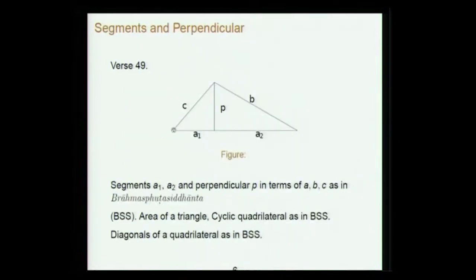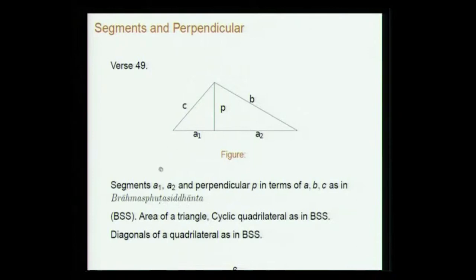For segments and perpendiculars he gives the usual results. If a triangle has base with segments a₁ and a₂ and a perpendicular, the results were given in Brahmasphuta Siddhanta and even earlier. Mahavira states the same results, then area of a triangle and cyclic quadrilateral same as in Brahmasphuta Siddhanta, and diagonals of a quadrilateral — also the same as in Brahmasphuta.